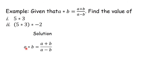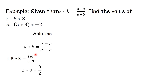Solution. A★B is equal to A plus B divided by A minus B. Beginning with 5★3, our A is 5 and our B is 3. So where there is A we substitute 5, and where there is B we substitute 3. So we have 5 plus 3 divided by 5 minus 3. 5 plus 3 gives us 8, and 5 minus 3 gives us 2. So 8 divided by 2 gives us 4. Therefore 5★3 is equal to 4.